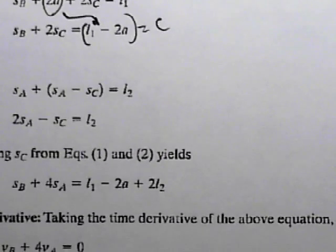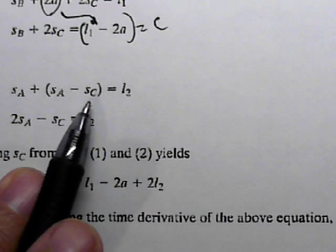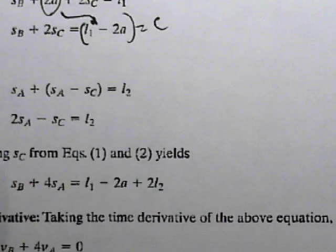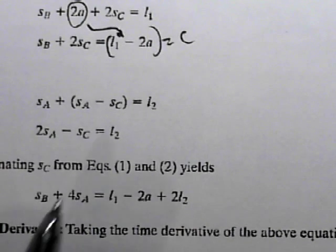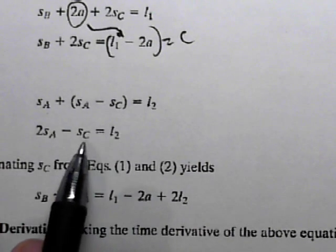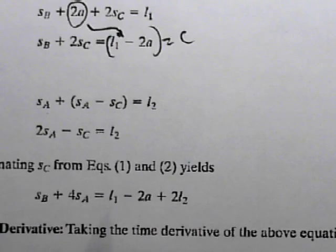And then our second rope, S_A plus S_A minus S_C, is also equal to a constant. And so this can become 2S_A minus S_C. We do the algebra.